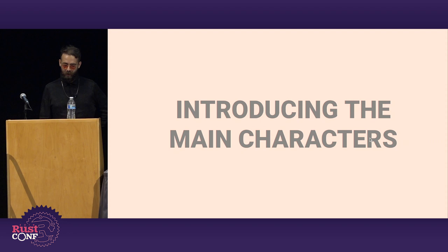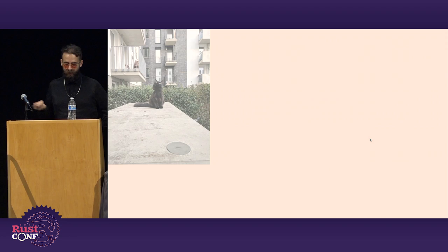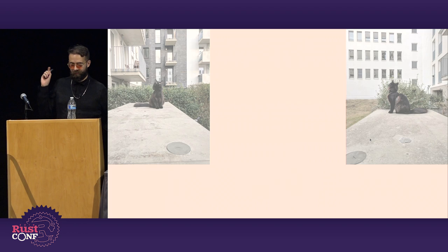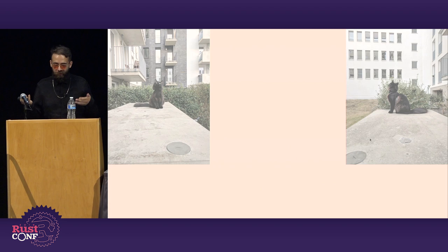Introducing the main characters of today's talk, because it's not me, it's not function main — it's actually this cat over here. His name is Chashu. Another cat — it's Nori. And because this is a Rust talk, we need to introduce some concurrency, some parallelism, so here they are together.